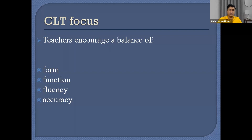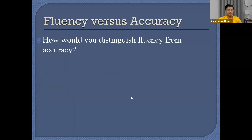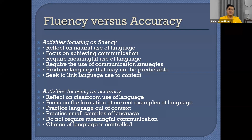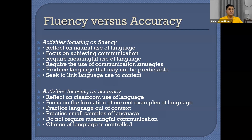What is the difference between fluency and accuracy activities? Fluency is more natural and related to communication and meaningful use of language. When I say meaningful, keep in mind the definition I gave earlier — something related to real-life communication, contextual communication, context-based communication. Fluency requires the use of communication strategies, produces language that may not be predictable, and seeks to link language use to context.